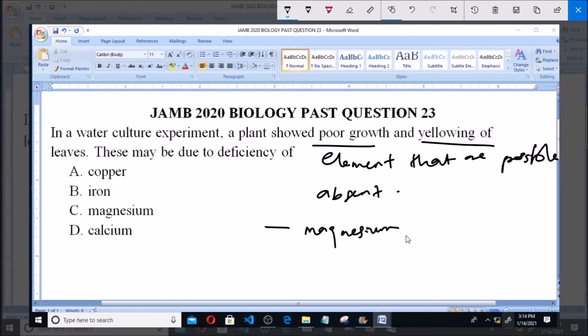of chlorophyll. If magnesium is deficient, the formation of chlorophyll will be altered and it will affect food production, which will result in poor growth and also cause yellowing of leaves. So magnesium is correct.